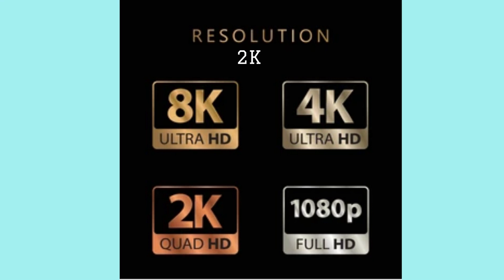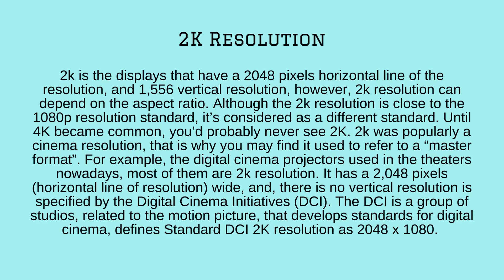2K refers to displays that have a 2048-pixel horizontal resolution and 1556 vertical resolution, though 2K resolution can depend on the aspect ratio. Although 2K is close to the 1080p standard, it is considered a different standard. Until 4K became common, 2K was rarely seen by consumers. 2K was primarily a cinema resolution — digital cinema projectors used in theatres today are mostly 2K resolution.